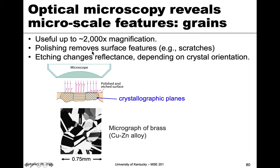To observe grain structure, we first need to get a flat plane, so we polish a material until we remove any surface features. Typically there are scratches on a surface and so forth, so we polish it to get it to be very mirror-flat.